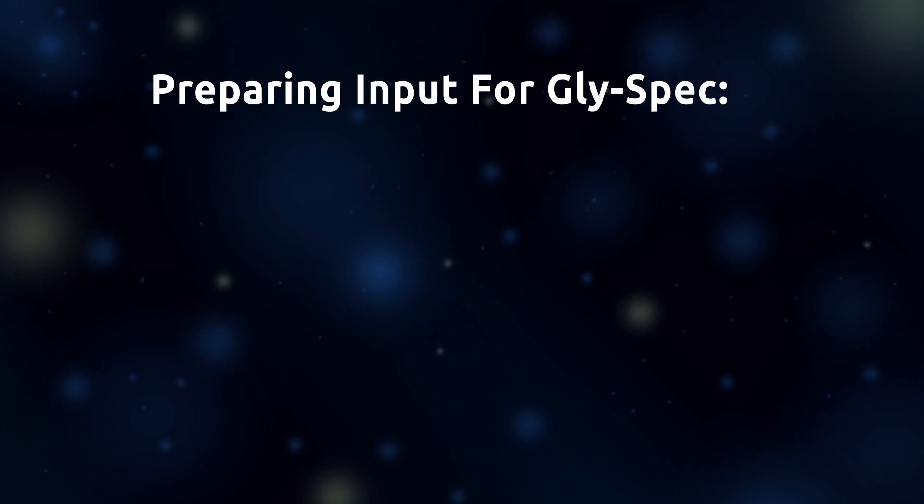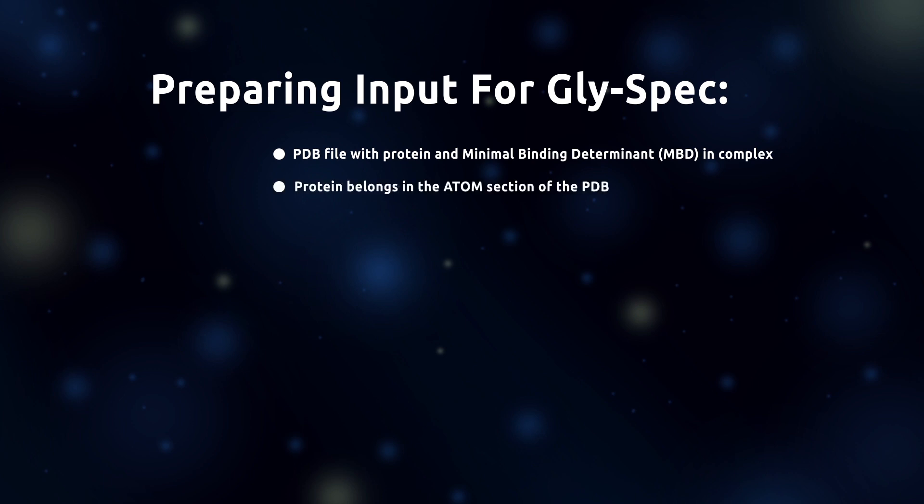In order to use the GlySpec tool, you will need a PDB file with a protein and a bound oligosaccharide that represents the minimal binding determinant, or MBD, of your glycan. In your PDB file, make sure that the protein is contained in the ATOM section and that the glycan is contained in the HETATM section.